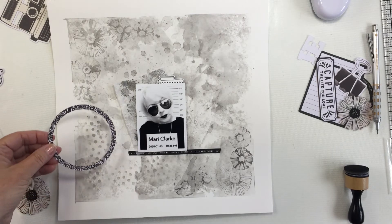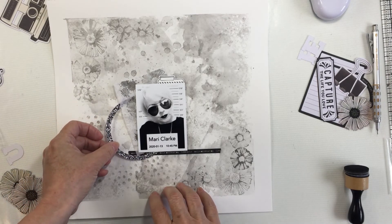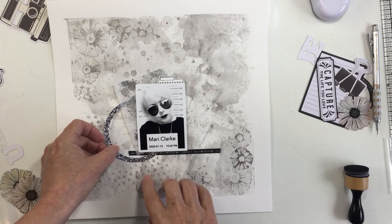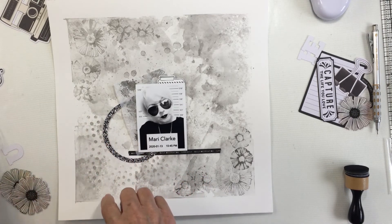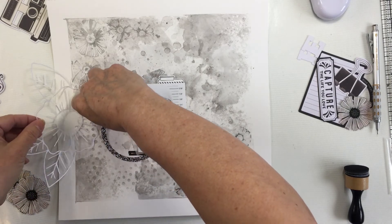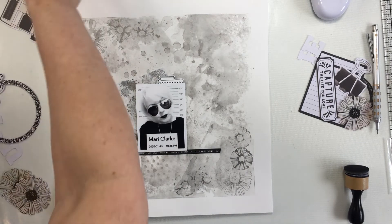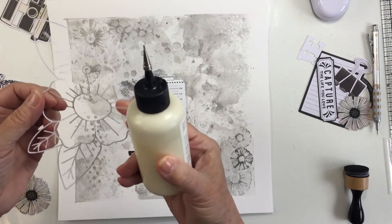I'm also going to use a few embellishments from a previous collection of Vicki's just because there weren't that many black and white die cuts in Color Study because it's beautifully colorful, right? So I'm just grabbing a couple of other little bits from another collection to help me out here to continue with my monochromatic color scheme.